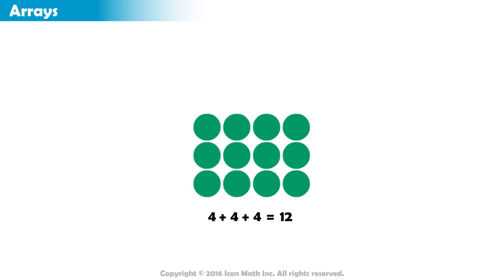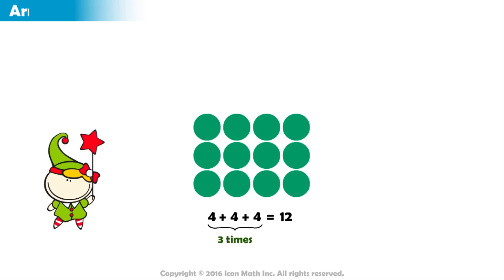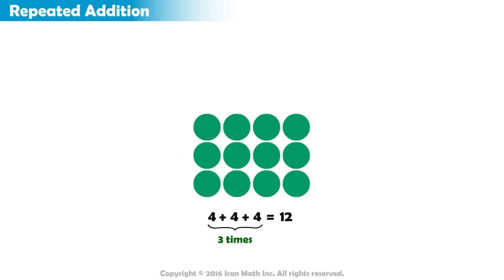We found the number of objects by adding four to itself three times, which means we used Repeated Addition. Is there another way to represent this situation?